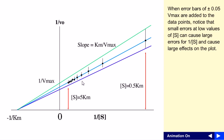Notice that smaller errors at the low substrate concentration can cause large errors of 1 by S and cause large effects on the plot, because this is based on the reciprocal of the substrate concentration, that means 1 by S.